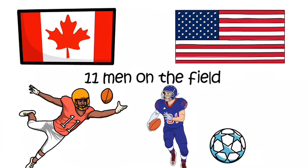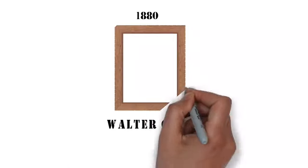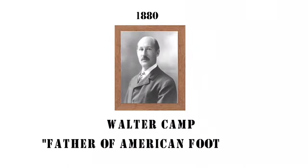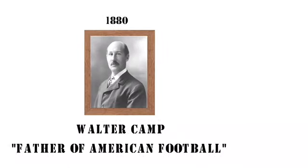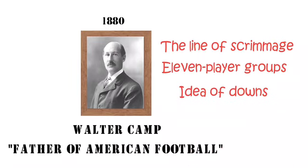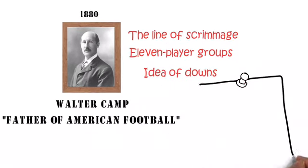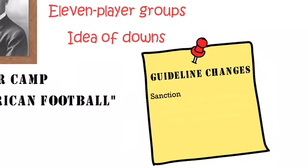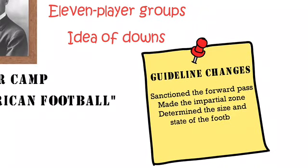A series of rule changes drawn up from 1880 forward by Walter Camp, the father of American football, established the snap, the line of scrimmage, 11-player teams, and the concept of downs. Later rule changes legalized the forward pass, created the neutral zone, and specified the size and shape of the football.